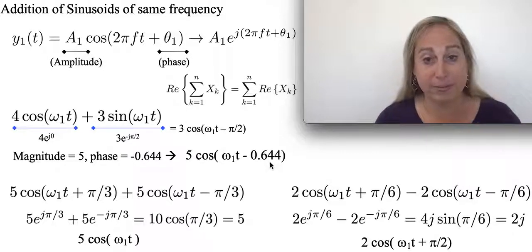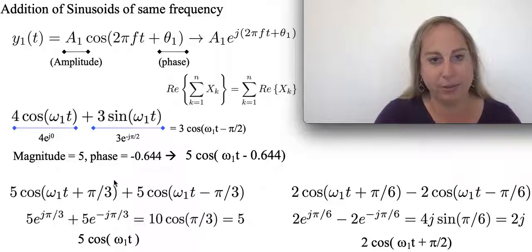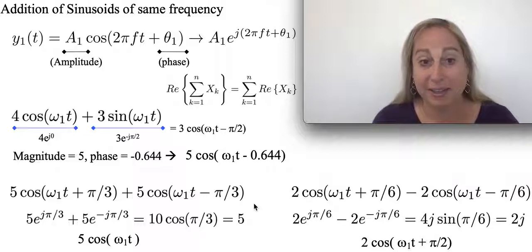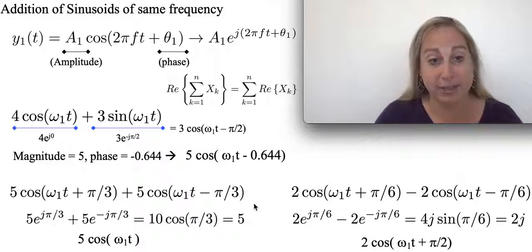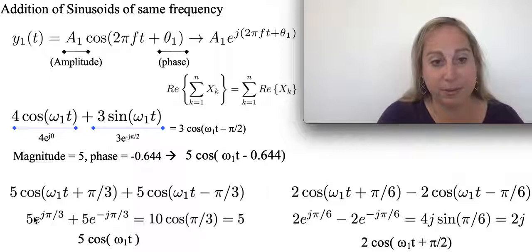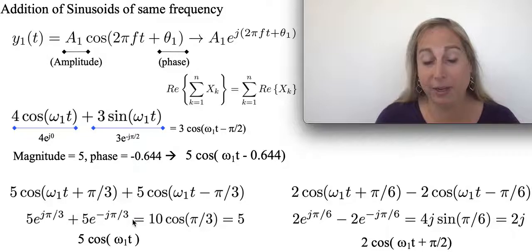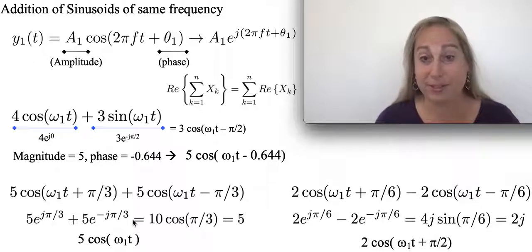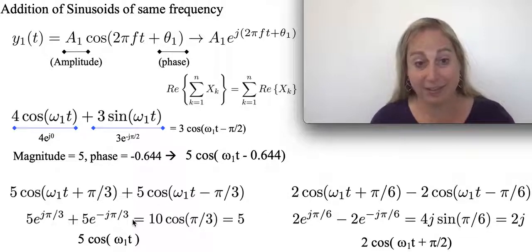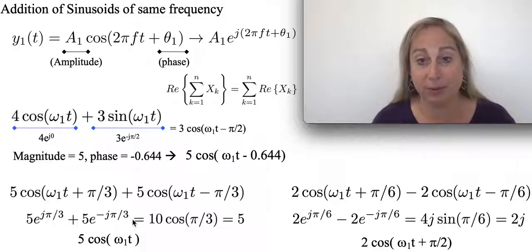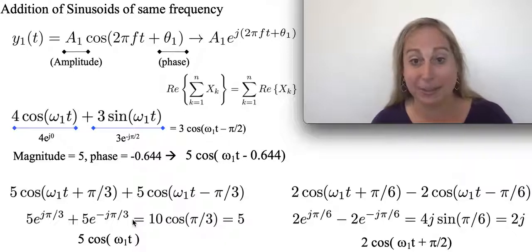Let's have some other fun with interesting ones. Take 5cos(ω₁t + π/3) + 5cos(ω₁t - π/3). Here I get 5e^(jπ/3) + 5e^(-jπ/3). That turns out to give you something like cosine, right? It's plus and minus of the same number. So it's the equivalent of 10 times cosine of π/3. Well, cosine of π/3 is 1/2, so 10 times 1/2 is 5. I got 5, that's kind of cool.